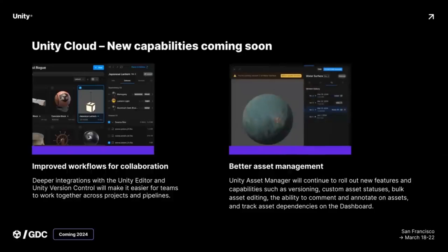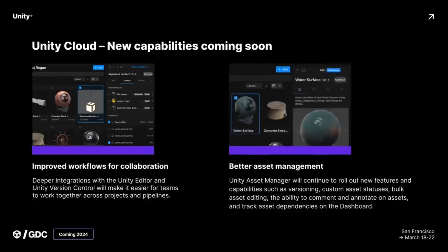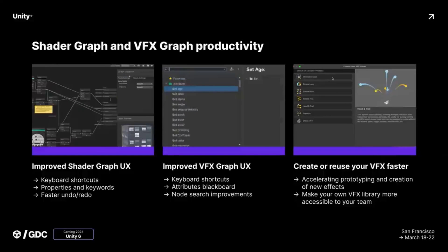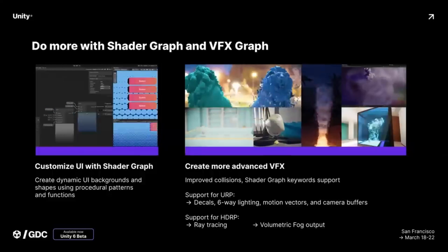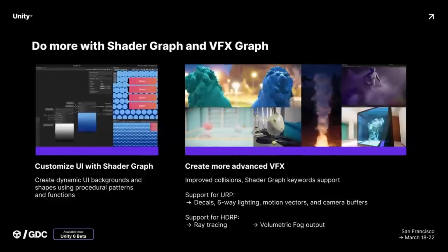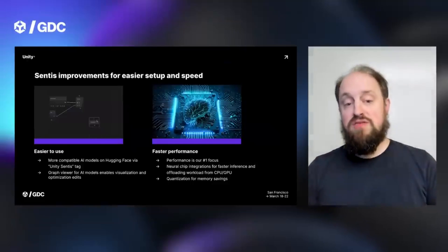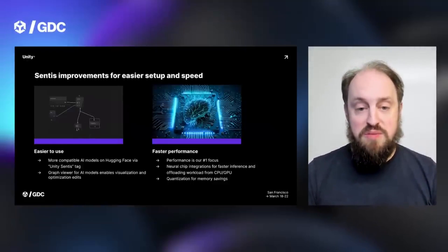The Asset Manager and Version Control are also going to be more tightly integrated into the editor. On the rendering side, customizable UI shapes and backgrounds can now be created procedurally with shader graph. The VFX graph also gained six-way lighting, motion vectors, and camera buffers if you're using the URP or Universal Render Pipeline, while HDRP got ray tracing and volumetric fog output, plus shader graph and VFX graphs now have hotkey support.